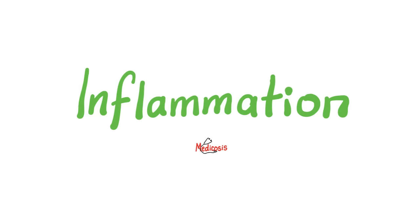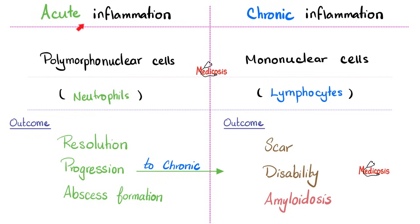A quick review of inflammation. We have two types: acute inflammation and chronic inflammation. The heroes of acute inflammation are your neutrophils, aka polymorphonuclear cells. The heroes of chronic inflammation are your lymphocytes — the mononuclear cells. The outcome of acute inflammation is A, resolution; B, progression into chronic inflammation; or C, abscess formation. The abscess is a collection of pus, and the pus cells are the neutrophils.